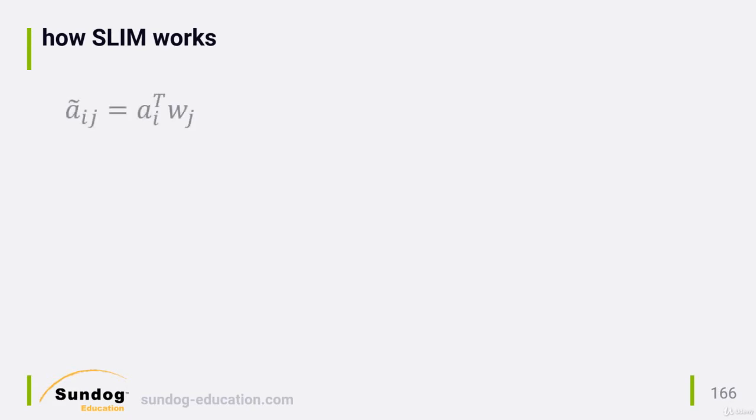Here's what the notation in the paper looks like. Tilda a sub i j represents the unknown score for a given user for a given item, and that's equal to the entire row of stuff that the user has rated, here indicated by a sub i t, multiplied by some pre-computed weights associated with that row. Because the user has only rated some items, and weights only exist for these items, that's where the word sparse comes from in this method.